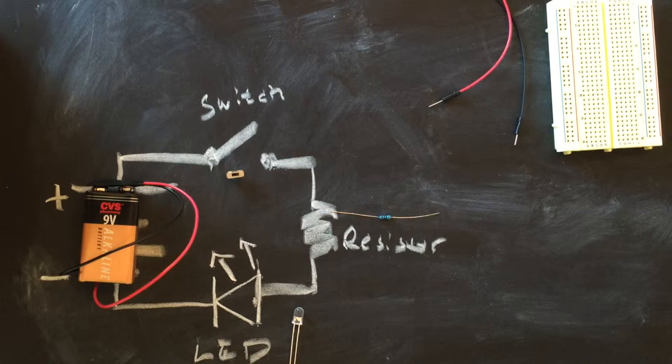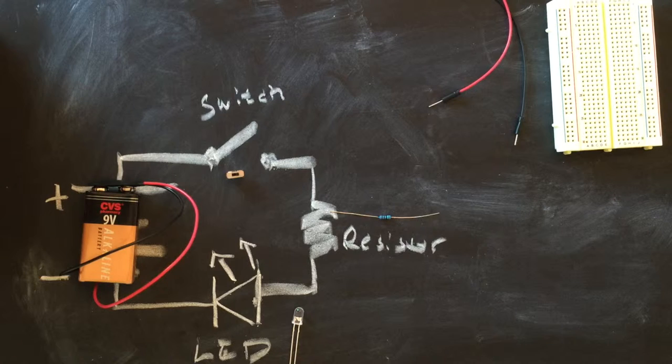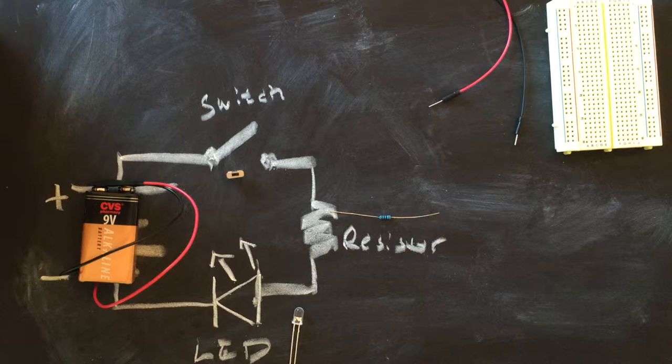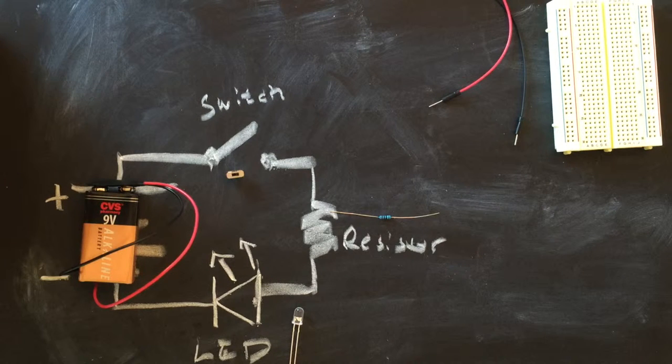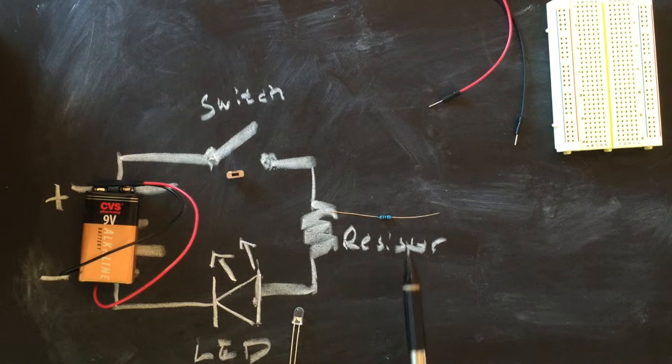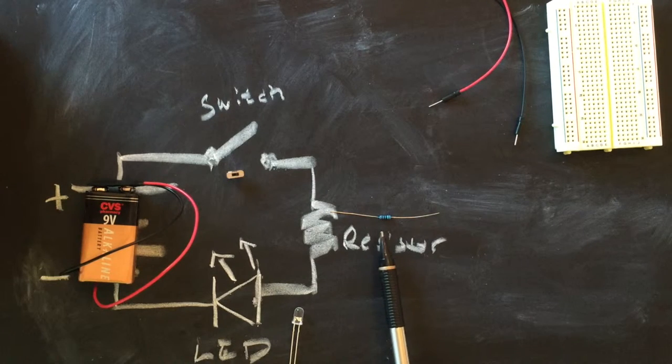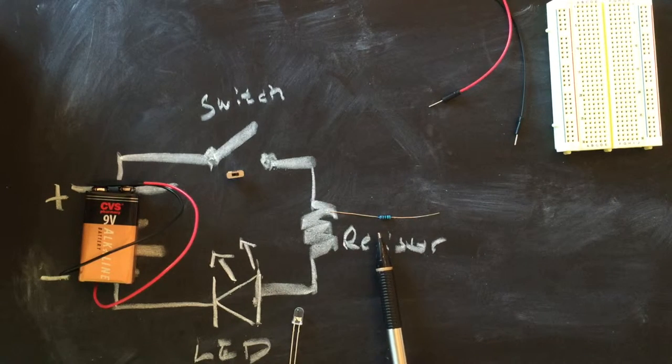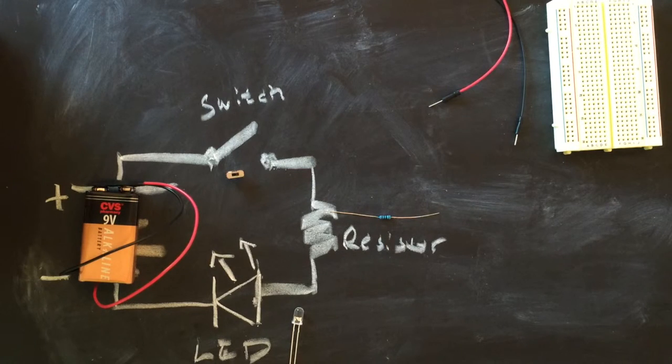So the first electronic component we're going to talk about in our diagram is the resistor, which is really denoted by that squiggly line and that blue-looking thing. And really what a resistor does is it regulates flow of electric current. Now current is just the flow of electrons that flows through the circuit.